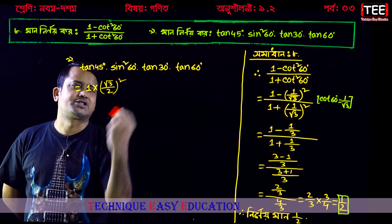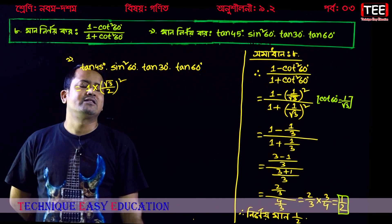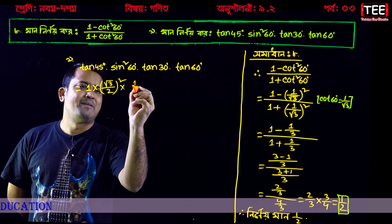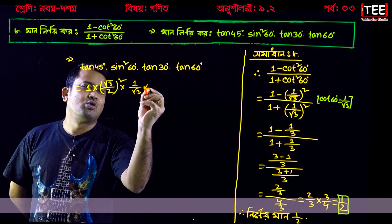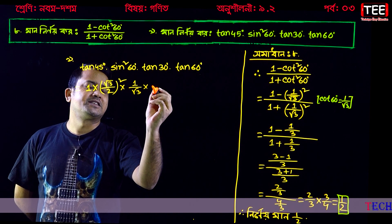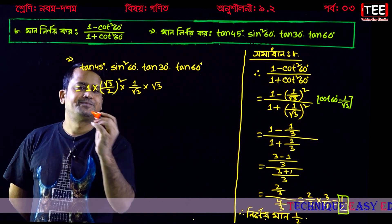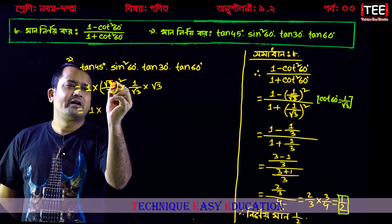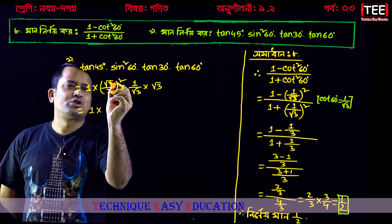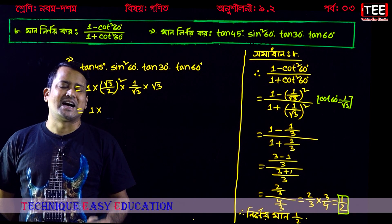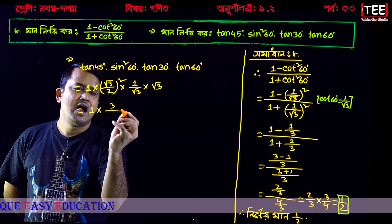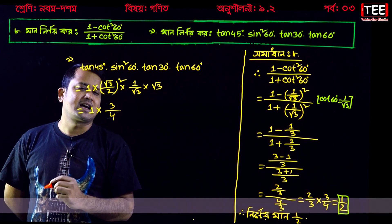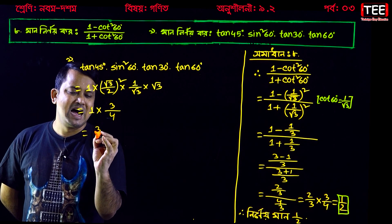Look: tan 30 degrees, tan 30 degrees equals 1 by root 3. Then tan 60 degrees, tan 60 degrees equals root 3. So we have root 3, root 3, root 2 squared, then 3, 2 squared, then 4. And root 3 times root 3 cancel. So we have 3 over 2 times 4.